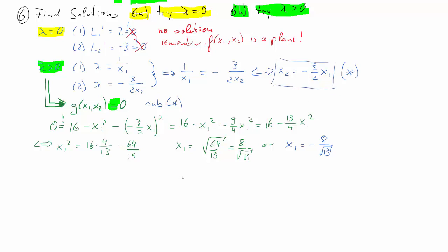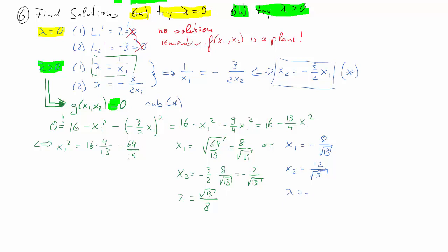So we have two potential solutions. Using x₂ = negative 3x₁/2, for the first (green) solution x₂ = negative 12/√13, and for the second (blue) solution x₂ = 12/√13. We also solve for lambda using equation 1: for the green solution lambda = √13/8, and for the blue solution lambda = negative √13/8.